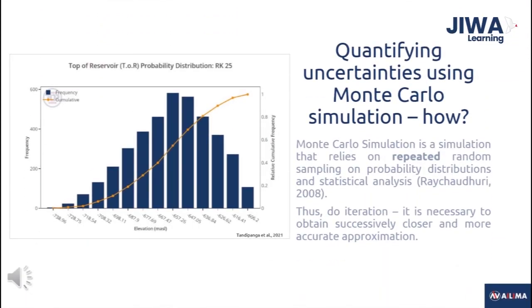Monte Carlo simulation is a simulation that relies on repeated random sampling on probability distributions and statistical analysis. To quantify top-of-reservoir uncertainties using Monte Carlo simulation, iteration is necessary to obtain successively closer and more accurate approximations. Furthermore, iteration ensures that the yielded estimates fulfill a specific confidence interval.